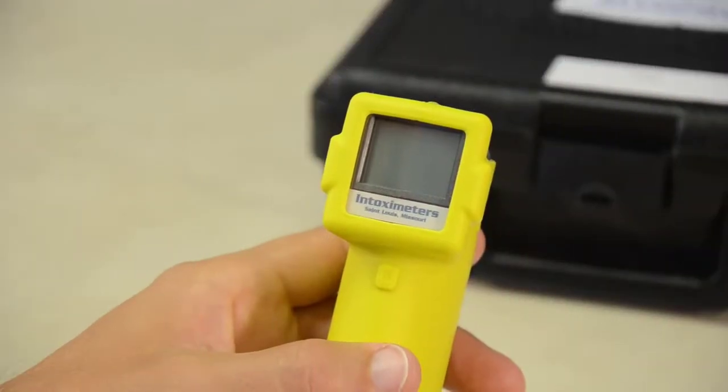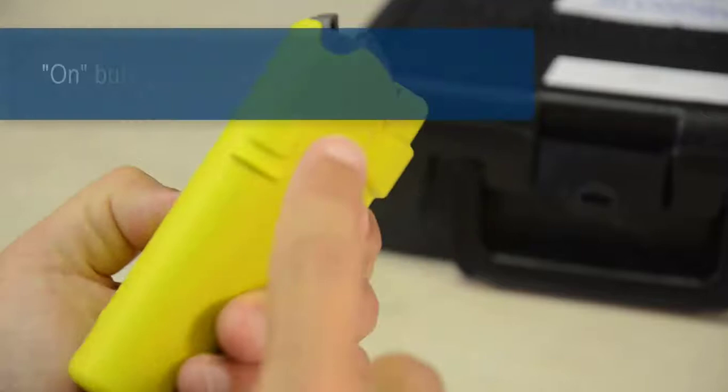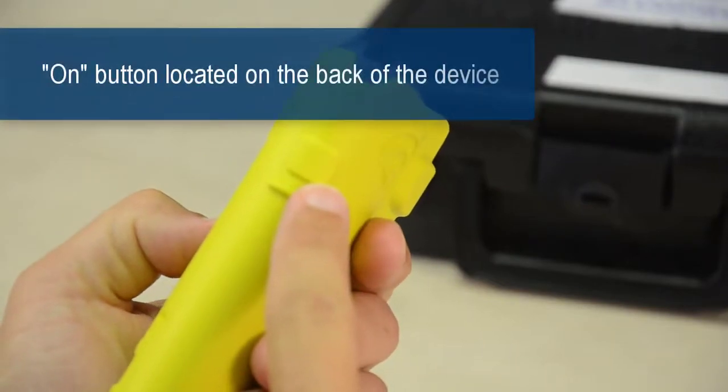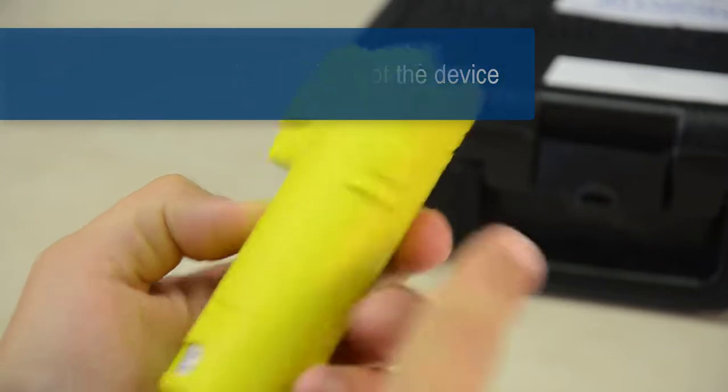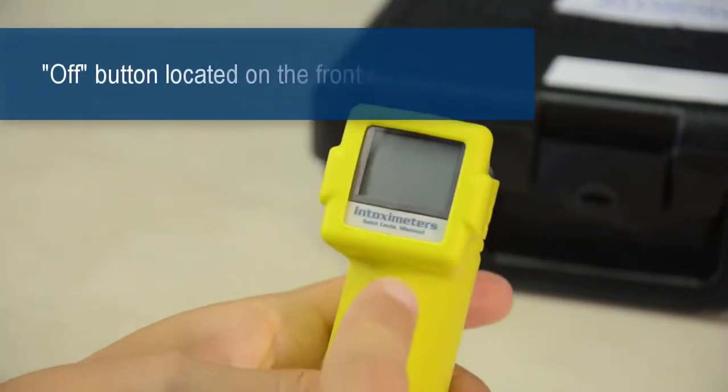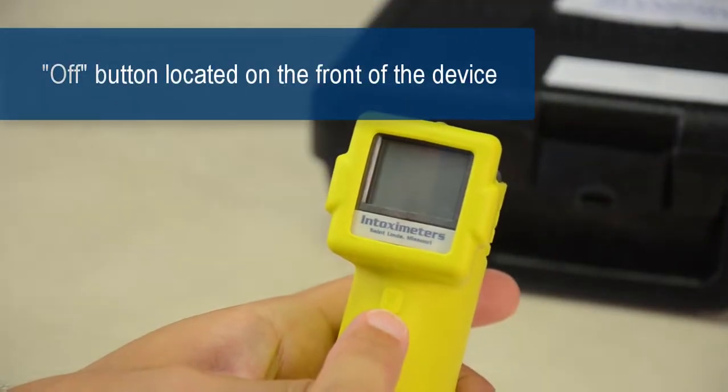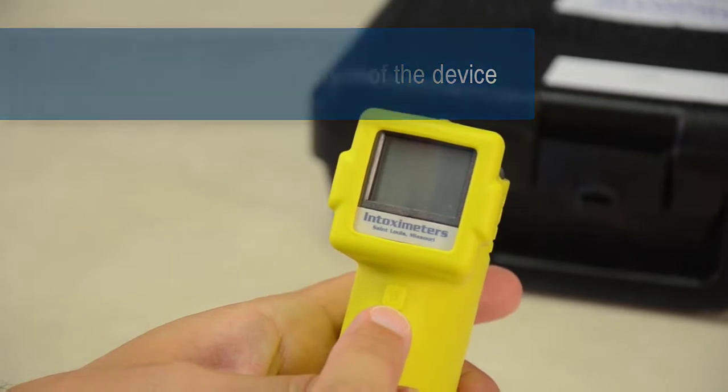There are two buttons on the device. The On button is located on the back of the device and can be activated using your trigger or index finger. The Off button, which is located on the front of the device, can be easily depressed using your thumb.